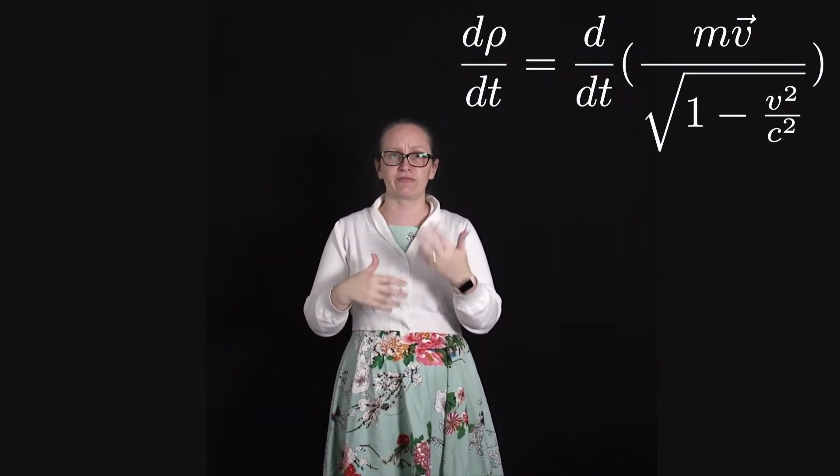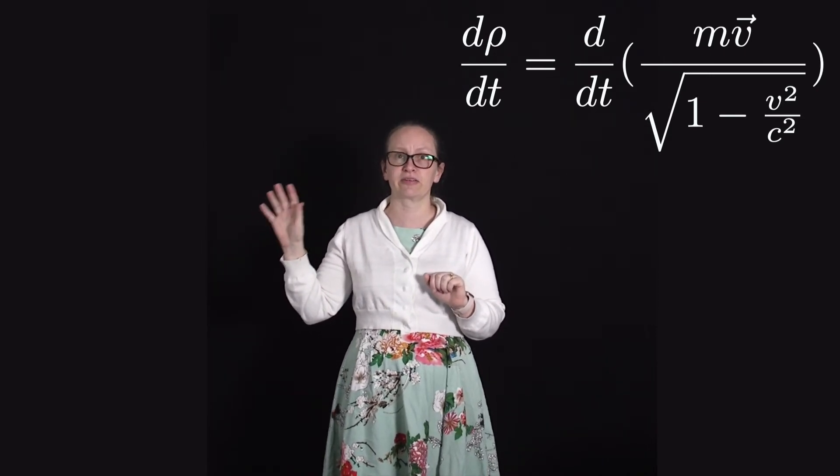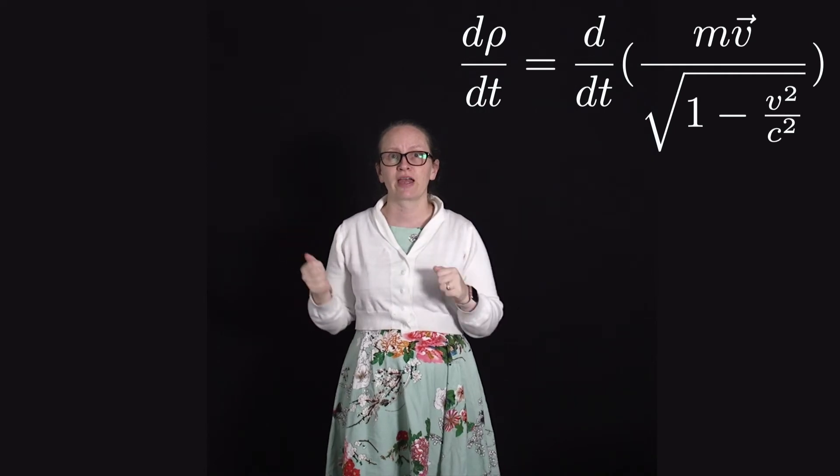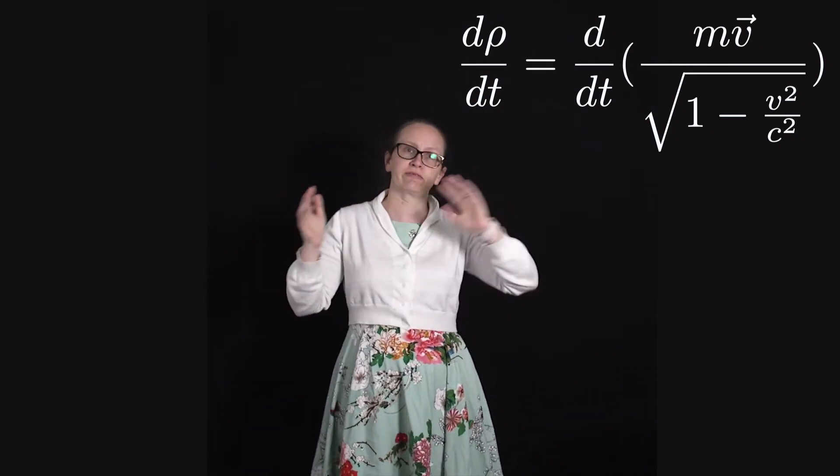Now as we get faster and faster, the denominator of the square root of 1 minus v squared over c squared gets closer and closer to 0, and as we divide by a really small number we end up with a really big number.